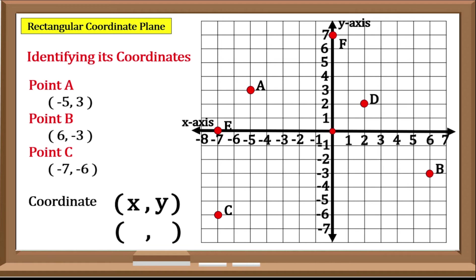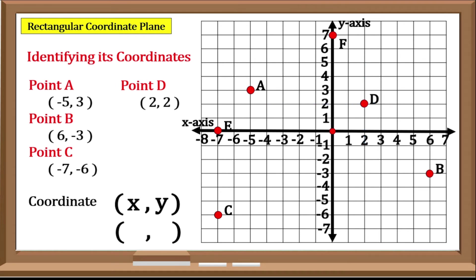Now let us try Point D. Create a vertical line along the X-Axis from the given point, which is positive 2, and a horizontal line along the Y-Axis from the given point, which is positive 2. So therefore, the coordinates of Point D are positive 2, positive 2.